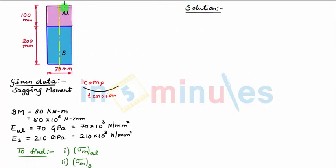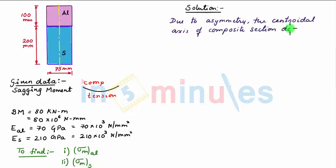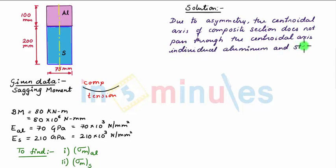Now we see that this composite section is asymmetrical about the horizontal axis. So due to asymmetry, the centroidal axis of composite section does not pass through the centroidal axis of individual aluminium and steel sections.